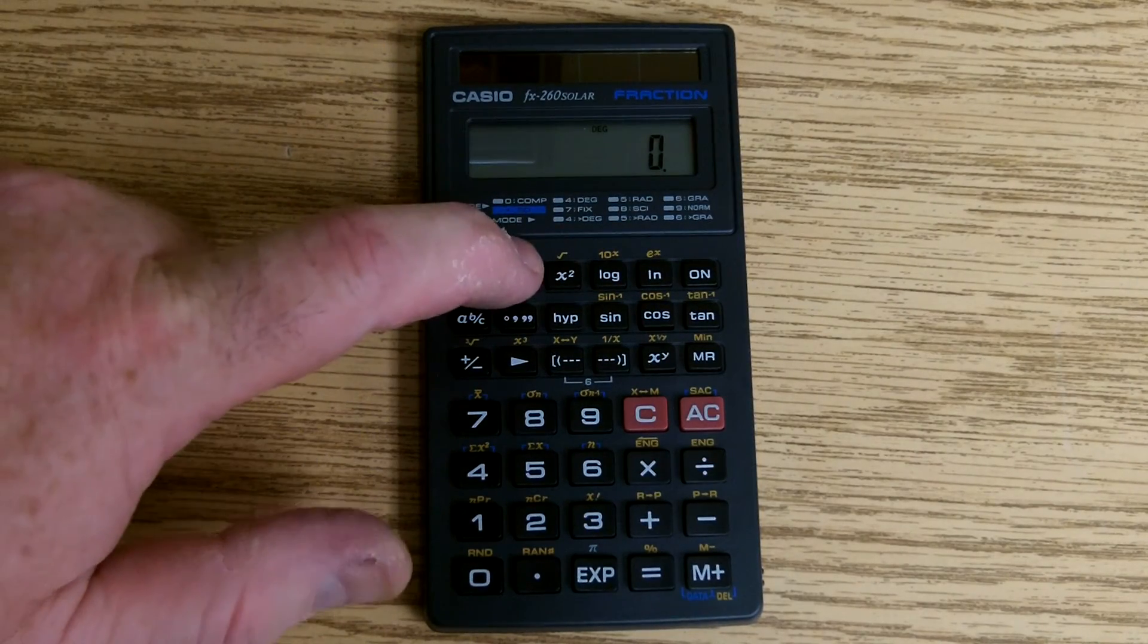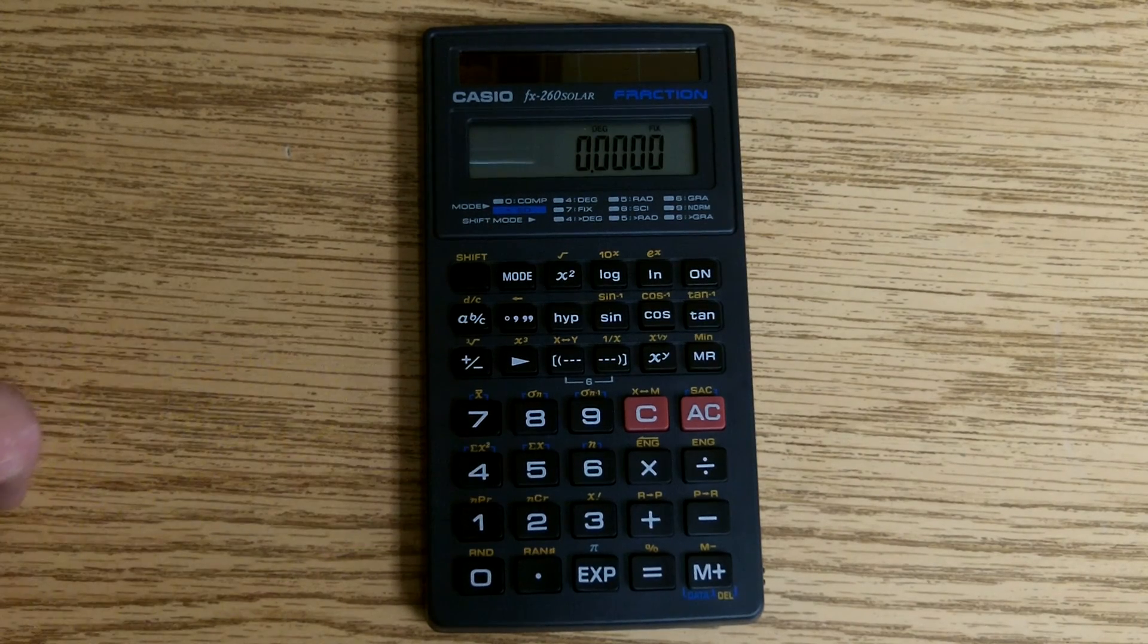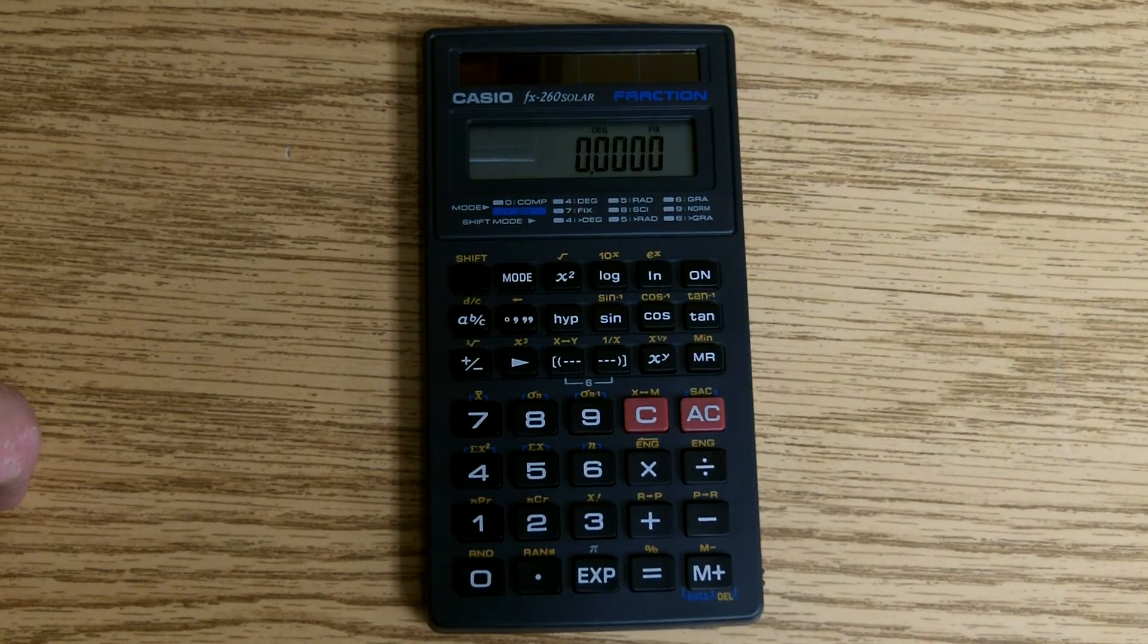So if we wanted four decimal places, mode 7, 4. All of our answers will now come out to four decimal places.